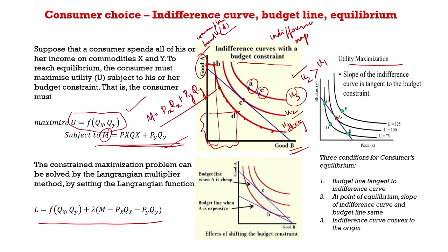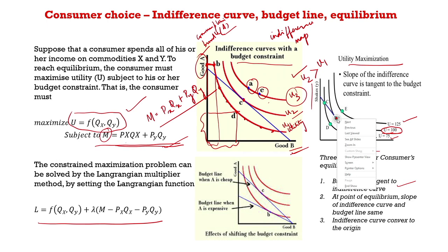There are three conditions for consumer equilibrium. First, the budget line must be tangent to the indifference curve. Second, at the point of equilibrium, the slopes of the indifference curve and the budget line are equal. Third, the indifference curves must be convex to the origin. The point of tangency—where the budget line just touches the indifference curve—is the consumer's optimum bundle given the budget constraint.